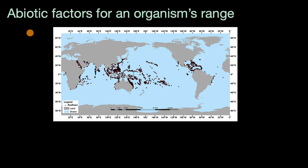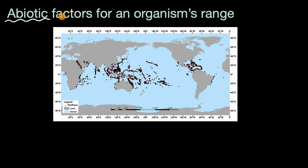Let's talk about abiotic factors for an organism's range. Abiotic means non-living, while biotic refers to living. So we're talking about non-living factors that affect an organism's range.